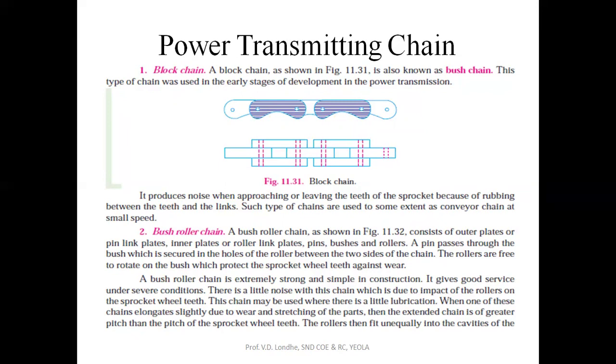Bush roller chain consists of outer plate, pin link plate, inner plate, roller link plate, pins, bushes, and rollers. A pin passes through the bush which is secured in the hole of the roller between the two sides of the chain, free to rotate around the bush to protect the sprocket from wear. Bush roller chain is extremely strong and simple and gives good service under severe conditions.